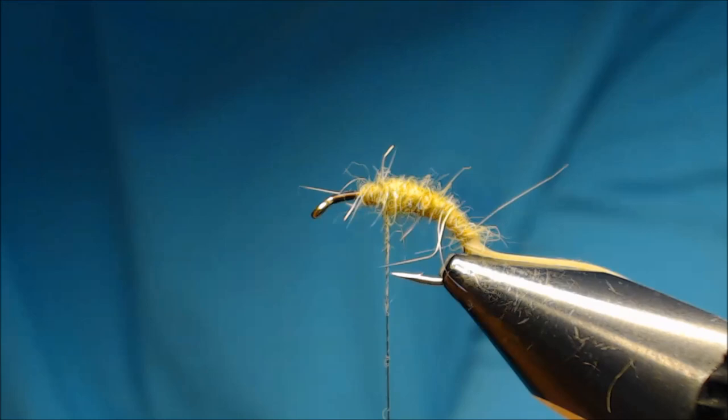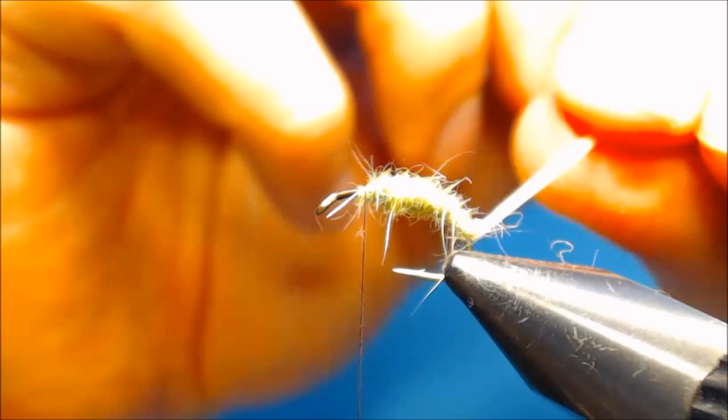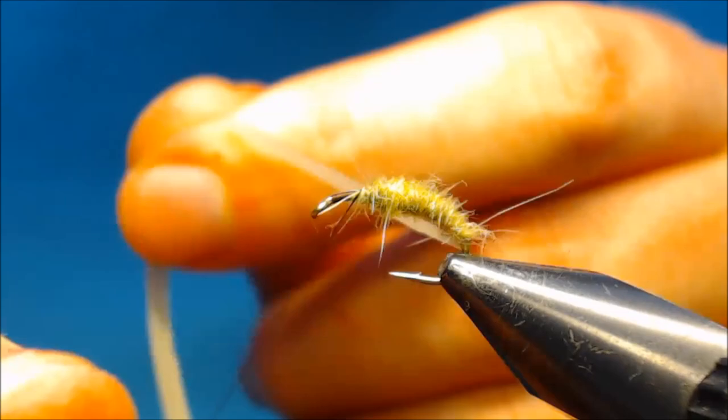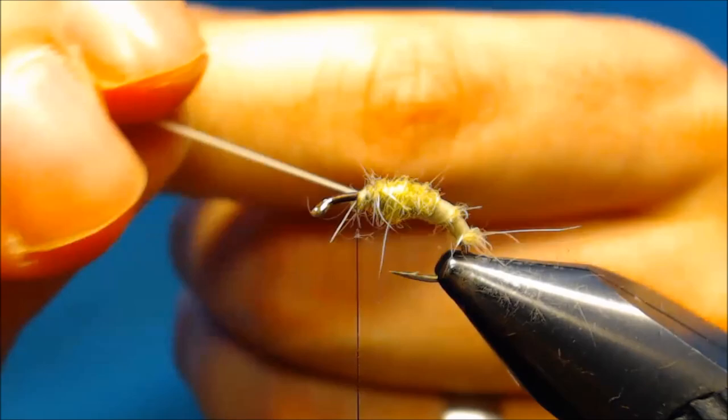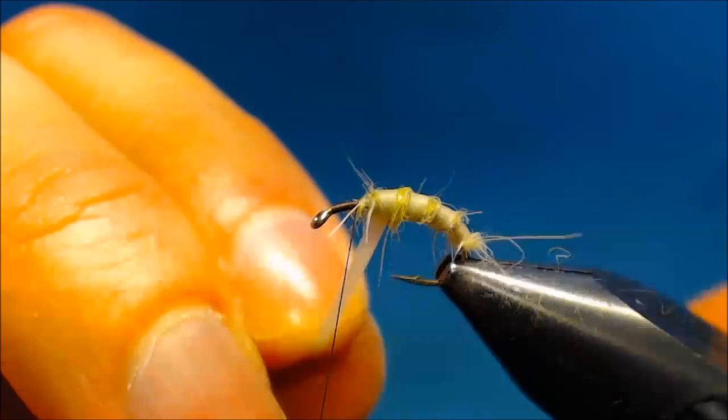And now we'll use this latex as a ribbing. So pull on it to make it a little thinner, and then pull it down. Wind this up, leaving just a little space of dubbing between each turn. And this will make for a nice segmented body with some dubbing in between. And we'll then brush out the dubbing.